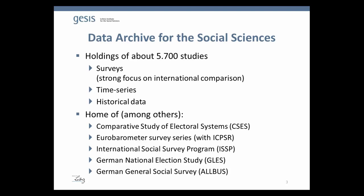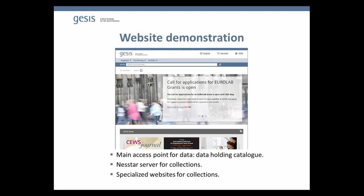The data archive holds close to 6,000 studies, mostly surveys with a strong focus on international comparison. We have a collection of time series — mostly economic, but also social indicators — and a small set of historical data from historians using social science methods. We are home to the International Social Survey Programme, and the German General Social Survey forms part of this. We also have a strong collection of election studies including the Comparative Study of Electoral Systems and German national election studies. One very prominent series is the Eurobarometer, commissioned by the European Commission — 600 surveys to date.